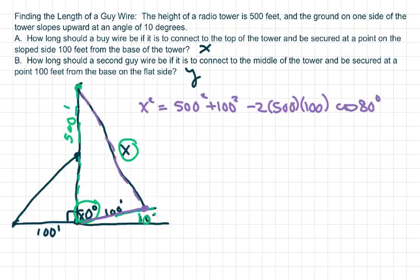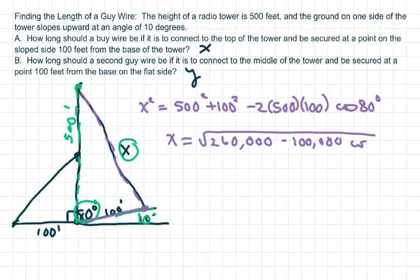And then I'm going to go ahead and take the square root and simplify at the same time. So we get the square root of 2,600,000 minus 100,000 cos of 80 degrees.